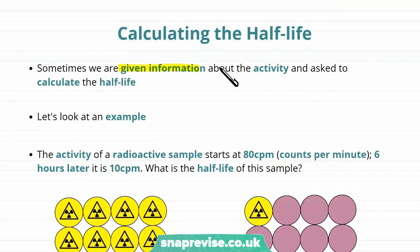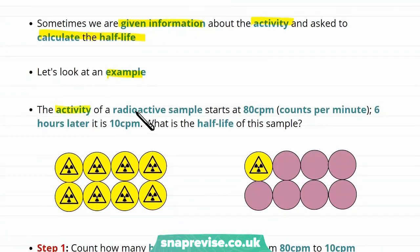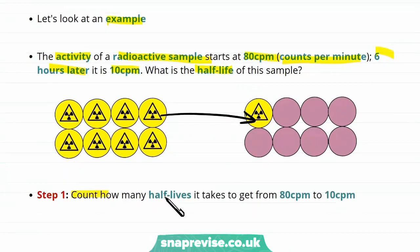Sometimes we are given information about the activity and from this we're asked to calculate the half-life. So let's take a look at an example of this. Imagine the activity of a radioactive sample starts at 80 counts per minute. Six hours later it is 10 counts per minute. What is the half-life of this sample? So we notice that this sample has gone down to one eighth of its original activity. The first step in answering this question will be to count how many half-lives it takes to get from 80 counts per minute to 10 counts per minute. So the idea here is that we know it took six hours to get from 80 counts per minute to 10 counts per minute.